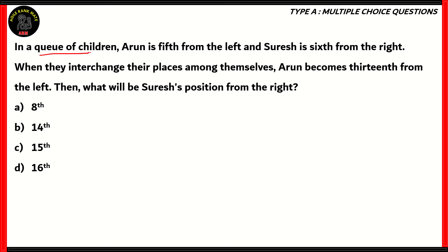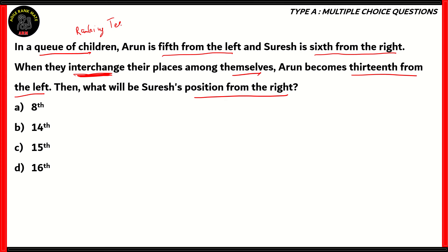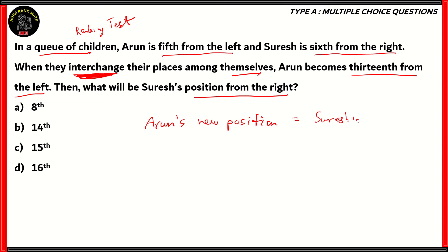Next question. In a queue of children, Arun is 5th from the left and Suresh is 6th from the right. When they interchange their places among themselves, Arun becomes 13th from the left. Then what will be Suresh's position from the right? Since we're looking at a queue, this is a question of ranking test. Arun is 5th from the left and Suresh is 6th from the right. When they interchange, Arun goes into Suresh's position and Suresh goes into Arun's position. After interchanging, Arun finds himself 13th from the left. So Arun's new position is Suresh's old position.